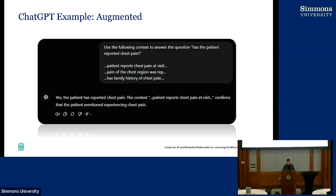In the next slide, this is the augmented version. I literally copy and pasted the simple example into ChatGPT, saying: 'Now use the following context, answer the question,' and provided three little chunks as snippets. Now it can actually answer and say: 'Yes, the patient has reported chest pain. The context — patient reports chest pain at visit — confirms that the patient mentioned experiencing chest pain.' It's using its interpretation and the new data sent to it alongside the question to make a response.